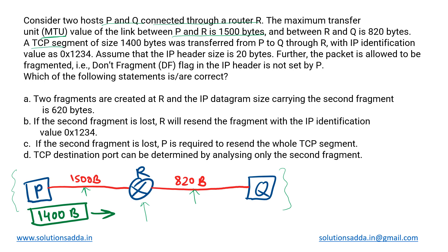A TCP segment of 1400 bytes has to be transferred from host P to host Q. There is no other path from P to Q, so we will have to go through the intermediate router R and then transfer that packet to host Q.